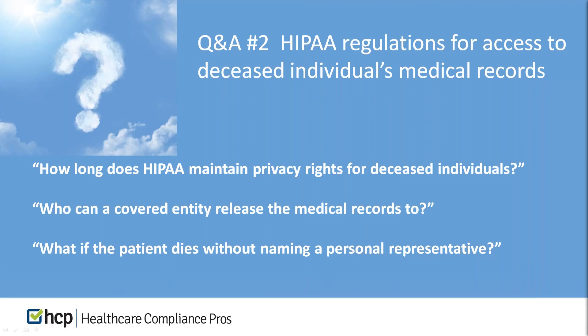While the privacy rule generally protects a decedent's health information to the same extent it protects living individuals' health information, there are also special disclosure provisions relevant to deceased individuals. For example, you as a covered entity may always use or disclose this information for research purposes, as long as it has been de-identified.